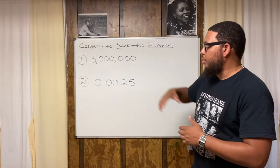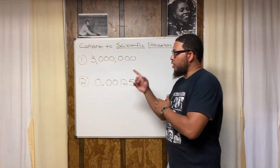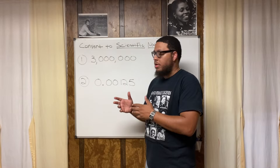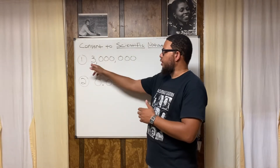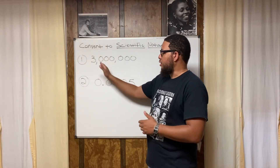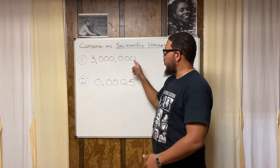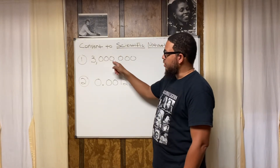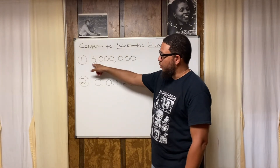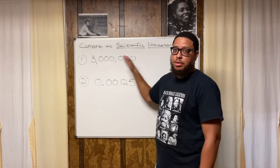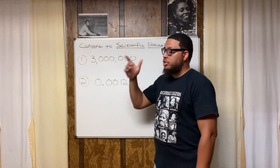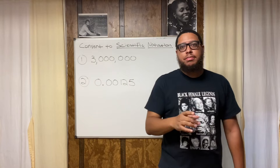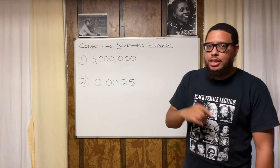So let's look at number one. Number one says three million. The first thing we got to know is how to read a number — you see all these zeros, you see a three, you see six zeros. That means three million because this is the ones place, tens place, hundreds, thousands, ten-thousands, hundred-thousands, millions. That's three million right there. First thing you want to do is locate the decimal point. That's your first step.